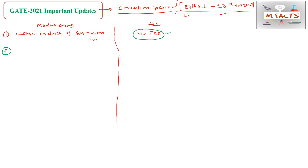The next change is related to the existing paper. If you want to change your existing paper, a fee of 500 rupees will be applicable for this change.